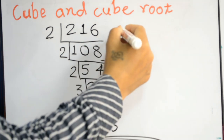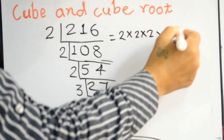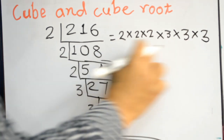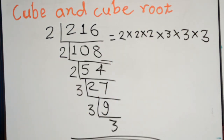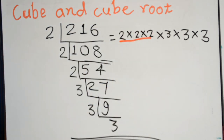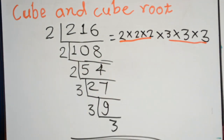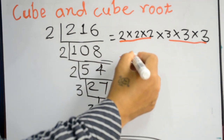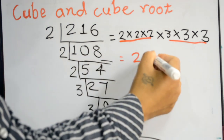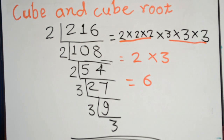So the prime factors of 216 are 2 times 2 times 2 times 3 times 3 times 3. To find the cube root, we select groups of three identical numbers: one group of three 2s and one group of three 3s. The product of 2 and 3 is 6, so 6 is the cube root of 216.